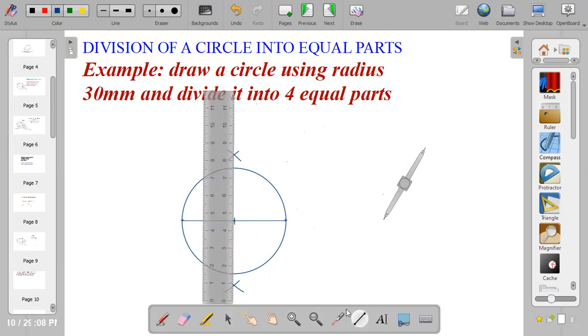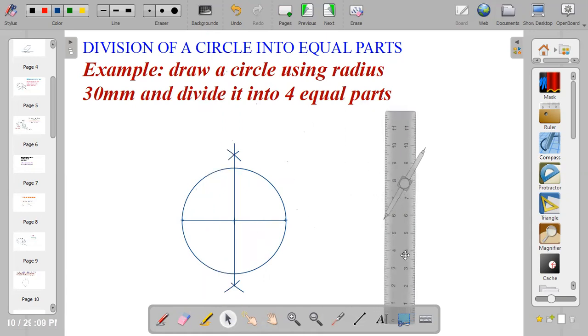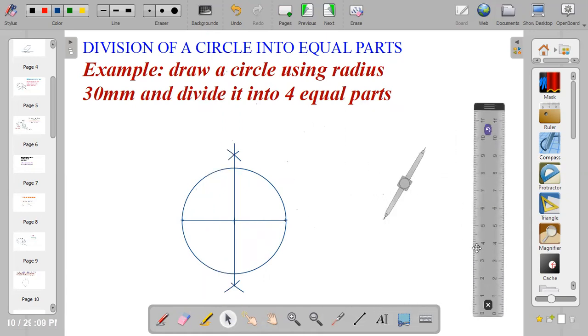Connect them together with a line. So now we have our circle divided into four equal parts: one, two, three, and four. In my next video, I'll show you how to divide the circle into equal parts. Watch out!